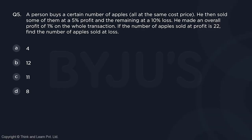Question number 5 — a typical question on profit and loss. The question says a person buys a certain number of apples all at the same cost price. He then sold some of them at a 5% profit and the remaining at a 10% loss, and he made an overall profit of 1%.